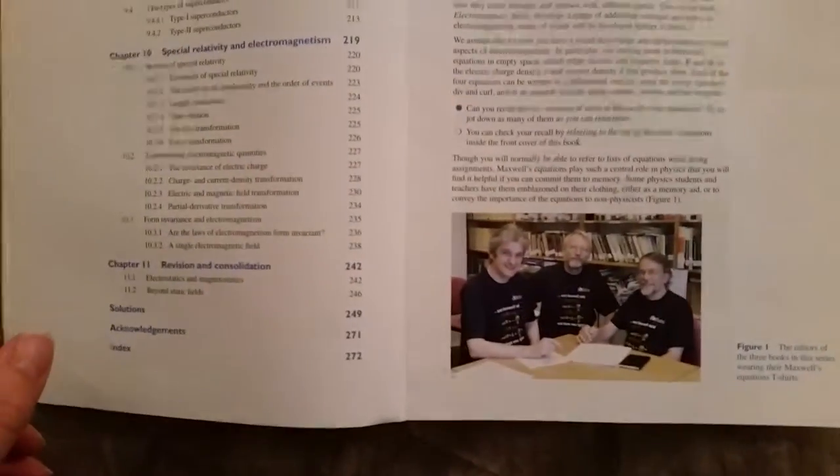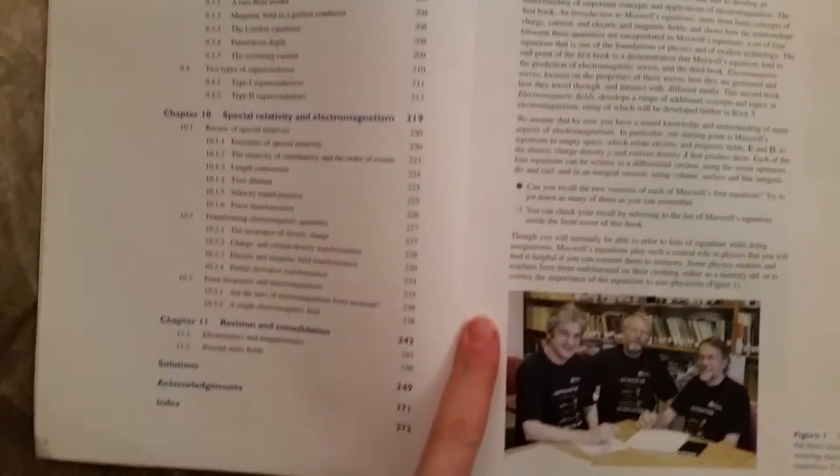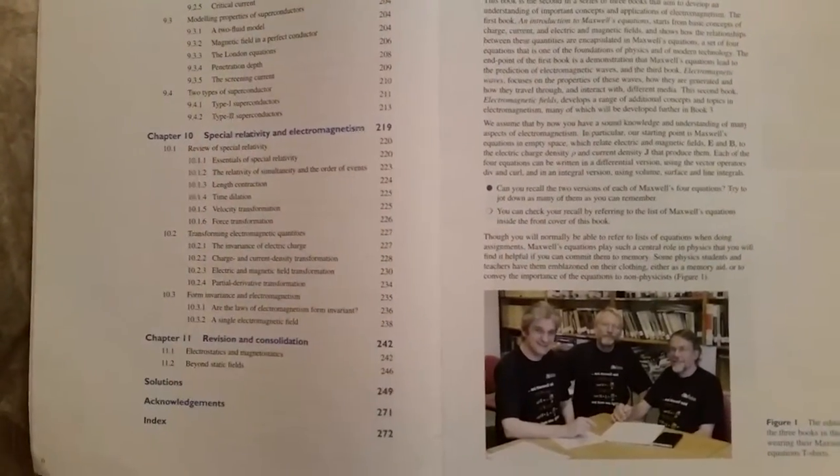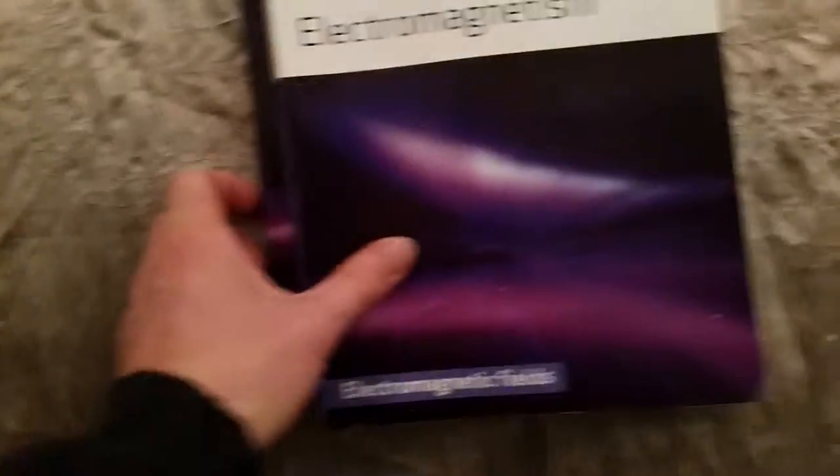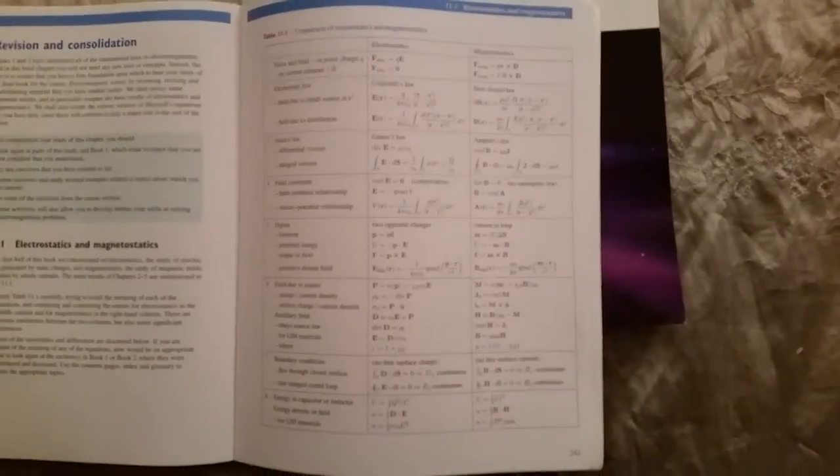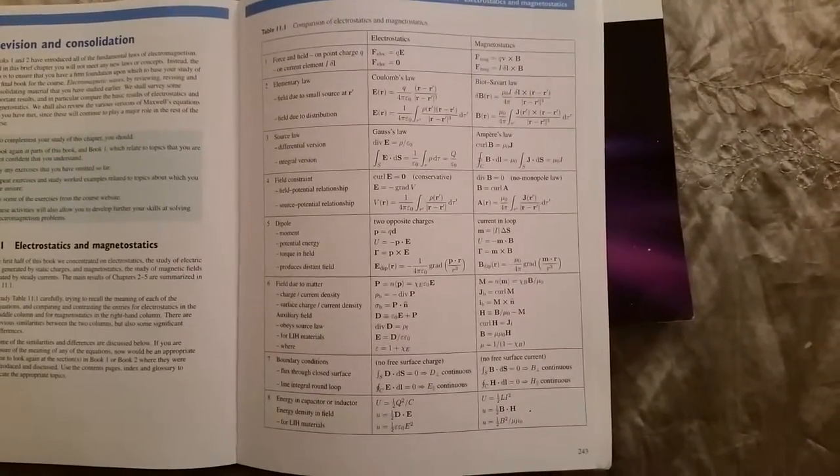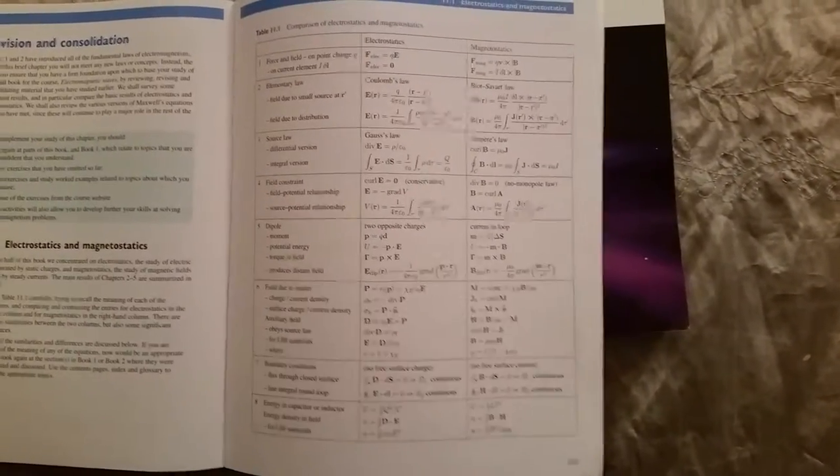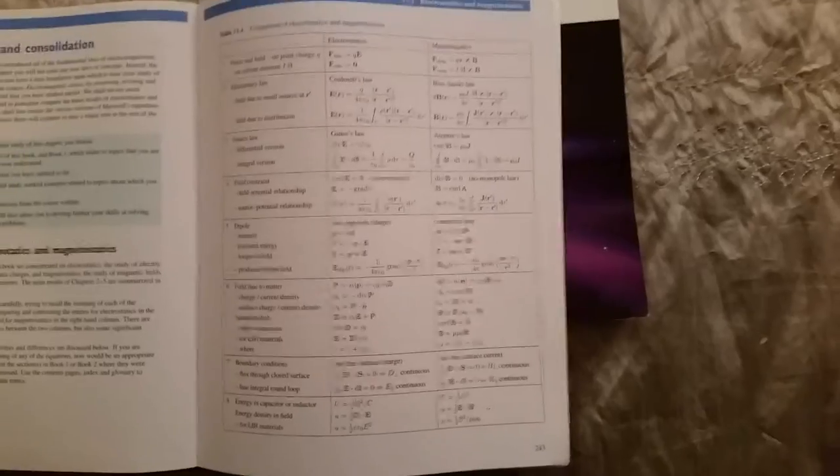There's an interesting section on superconductivity which often comes up in the exams I noticed, and then there's a little section on special relativity and electromagnetism. And at the back of this book there's a really handy revision page there which goes through the electrostatic side of things and compares it to the magnetostatic, and I found that really useful.